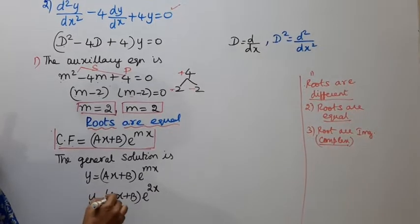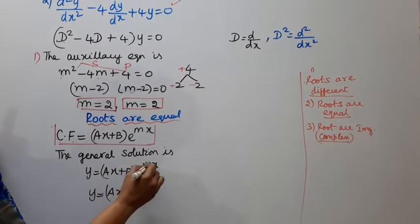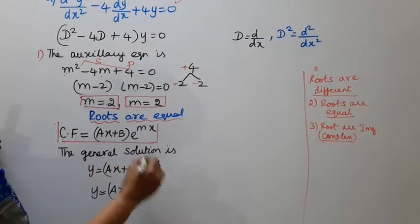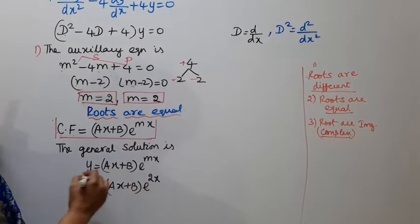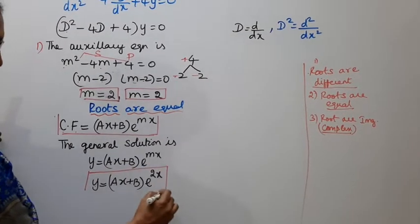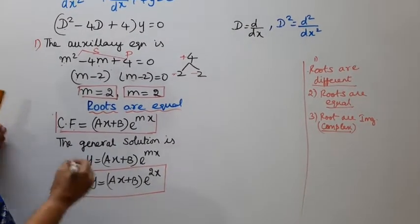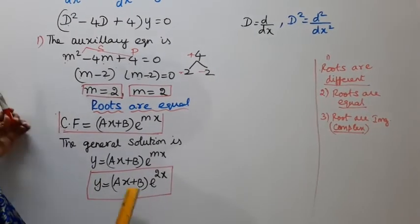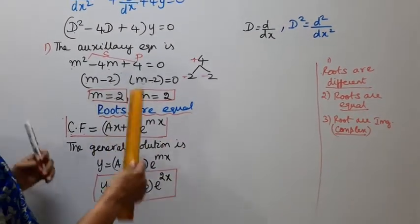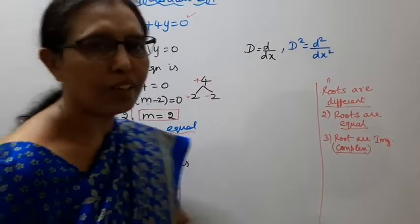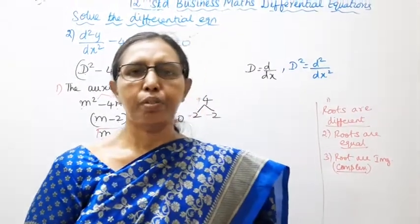y = (Ax + B)e^(mx) = (Ax + B)e^(2x). Therefore, y = (Ax + B)e^(2x). This channel helps to get 100 marks.